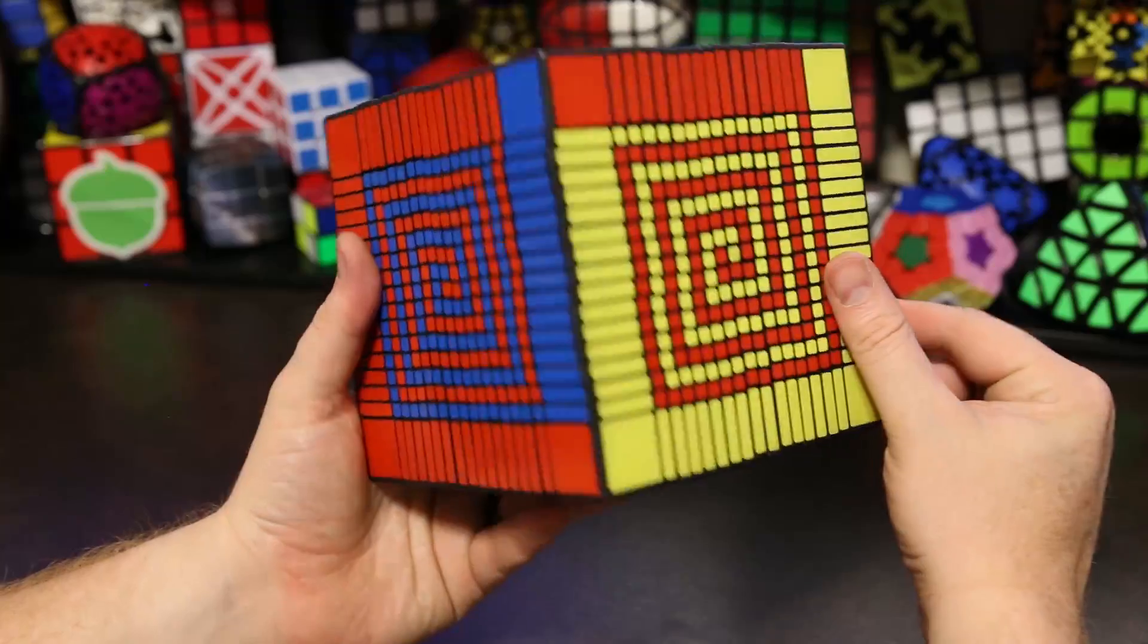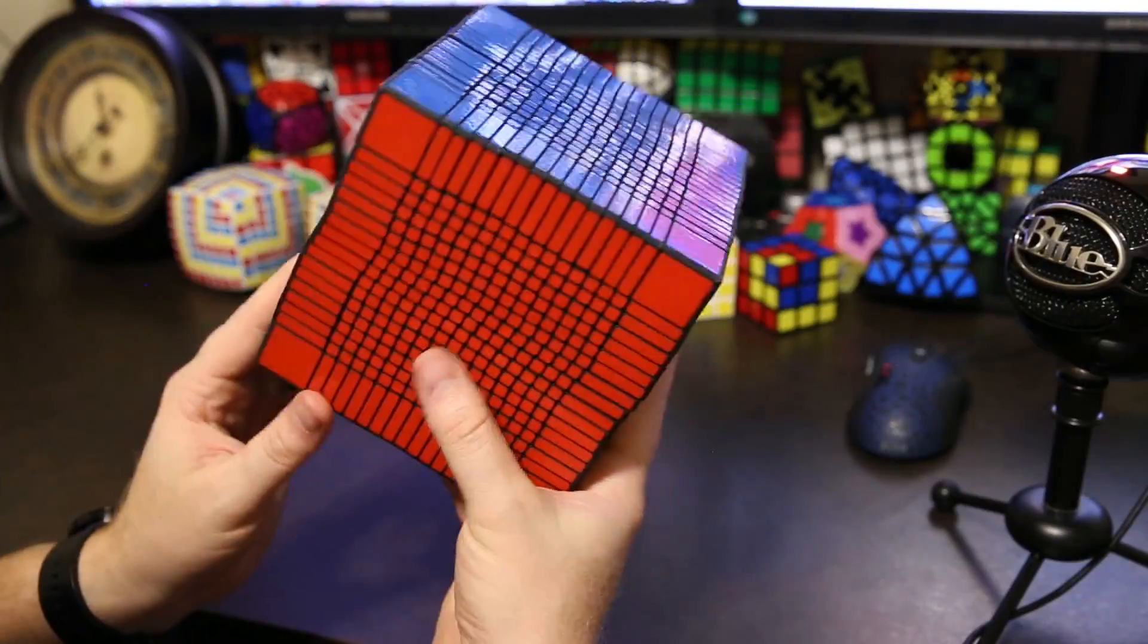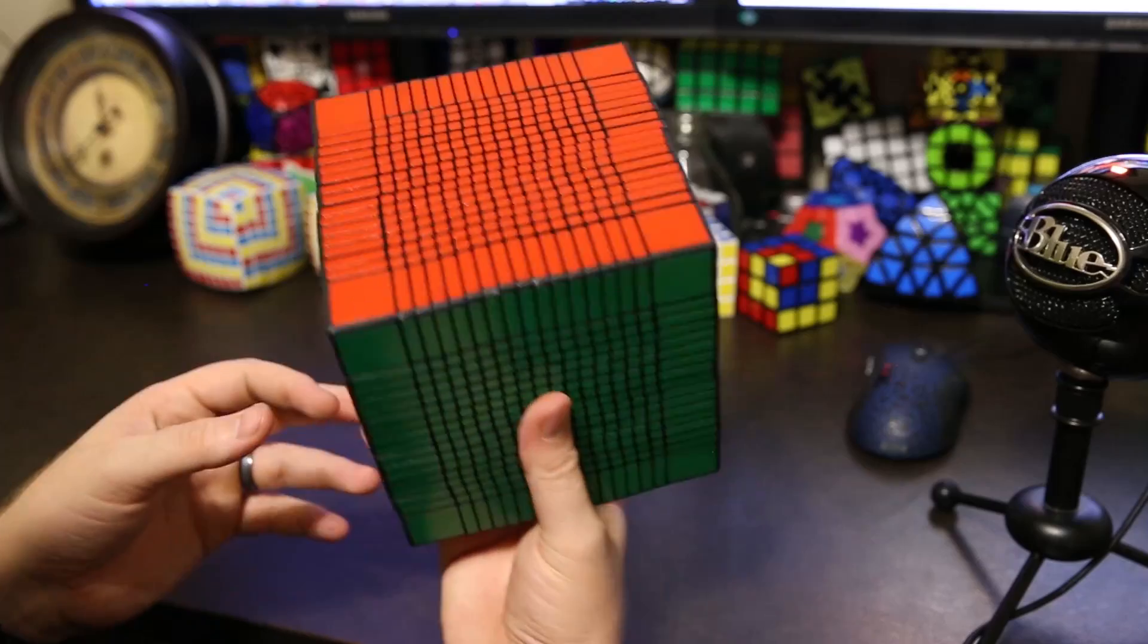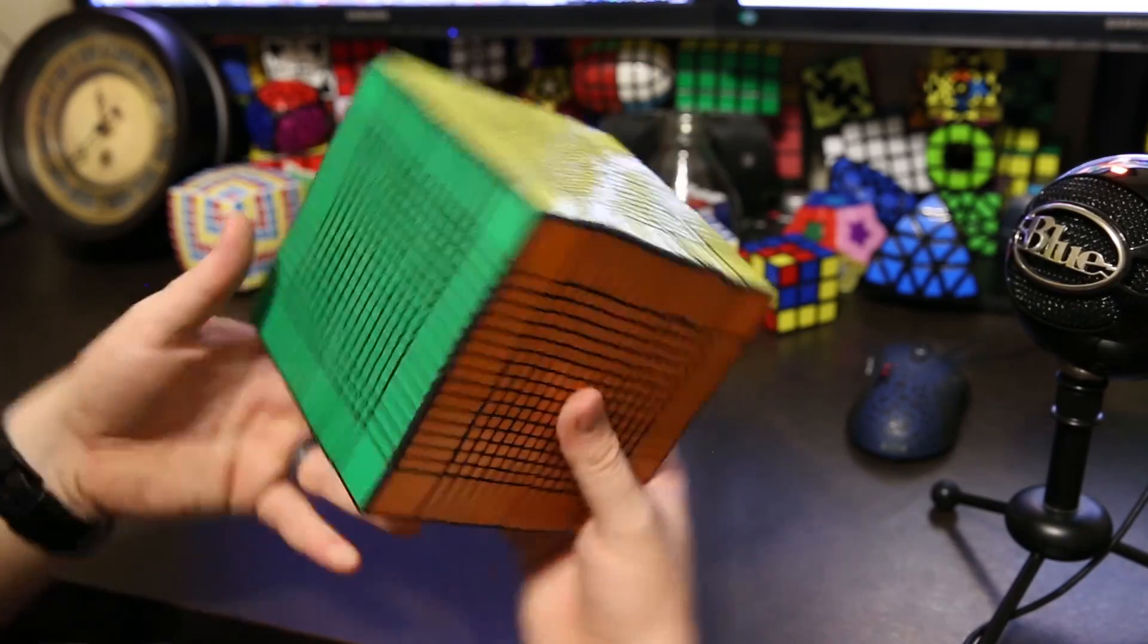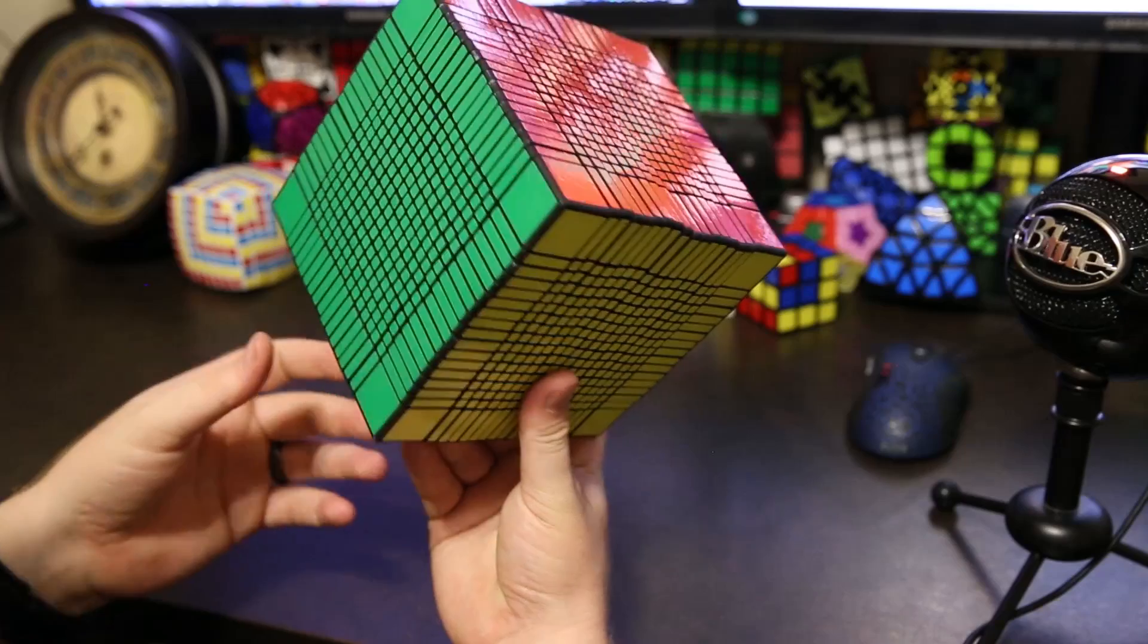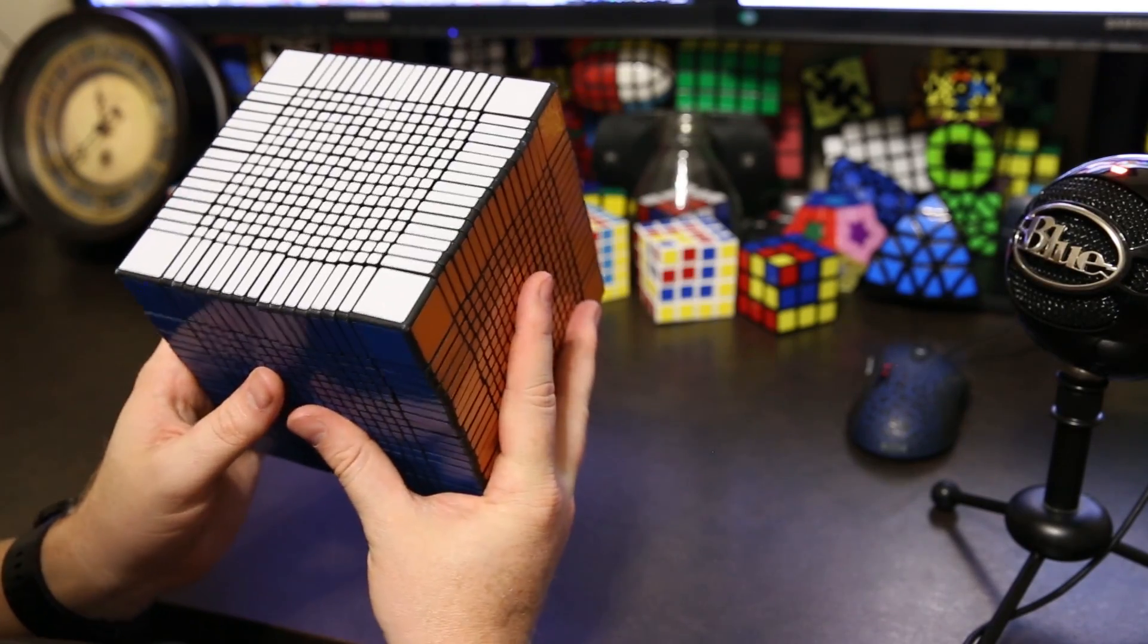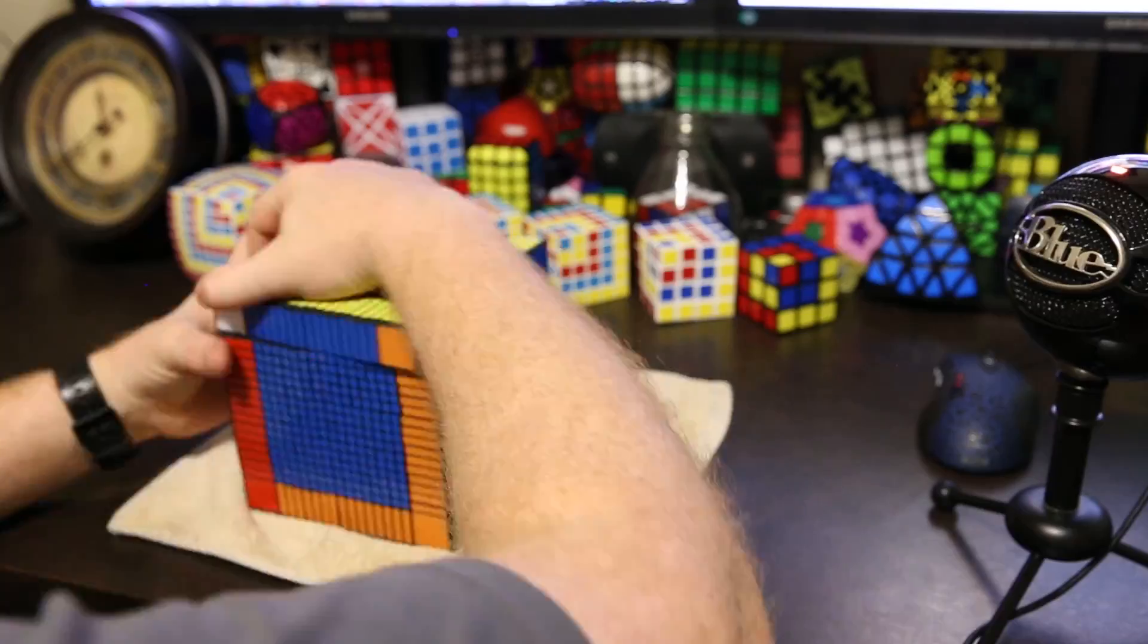All right, it's time to do the cube in a cube on the 17 by 17. I believe this will be the first time it's ever done on such a big puzzle and I'm really excited to give it a try. I hope I succeed, and if I don't, well that's too bad, I'll have a scrambled cube. So yeah, let's give it a try.